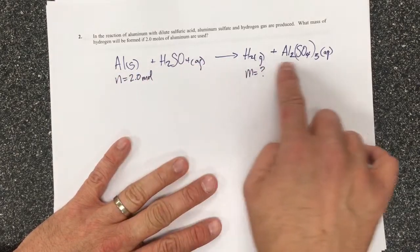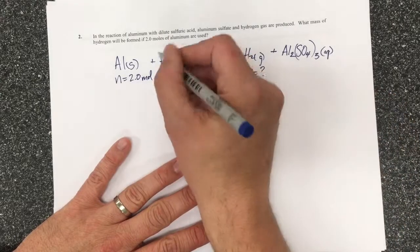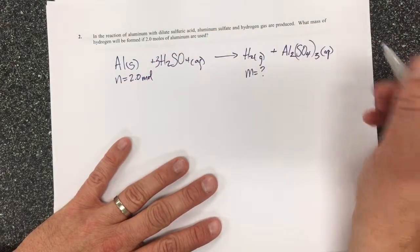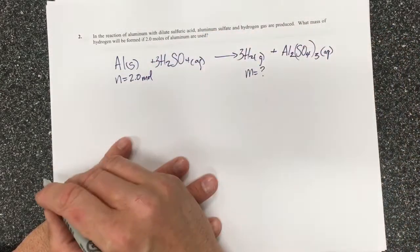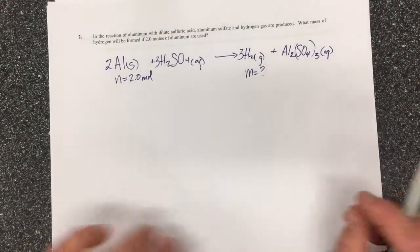So I've got my reaction, it's not currently balanced. I've got three sulfates, so I'm going to do that, then I'm going to get three hydrogens and I get two aluminums to balance my reaction.